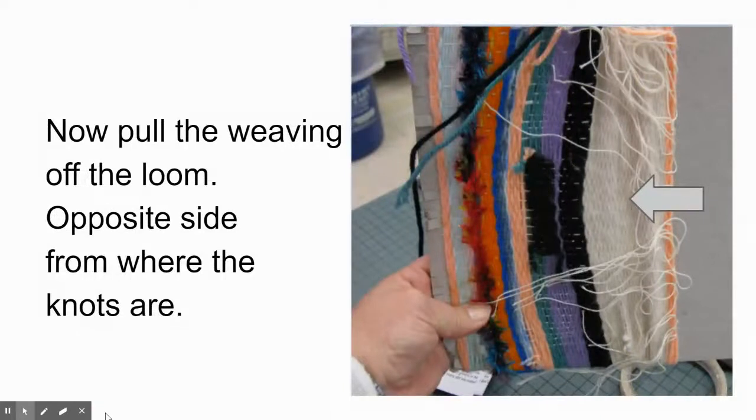Now it is time to pull it off the loom. You only cut the strings on the top. Pull it down. Notice the arrow. Pull it down to the bottom. You have to use a little bit of muscle. Now the opposite side of where the strings were tied. Pull it down.